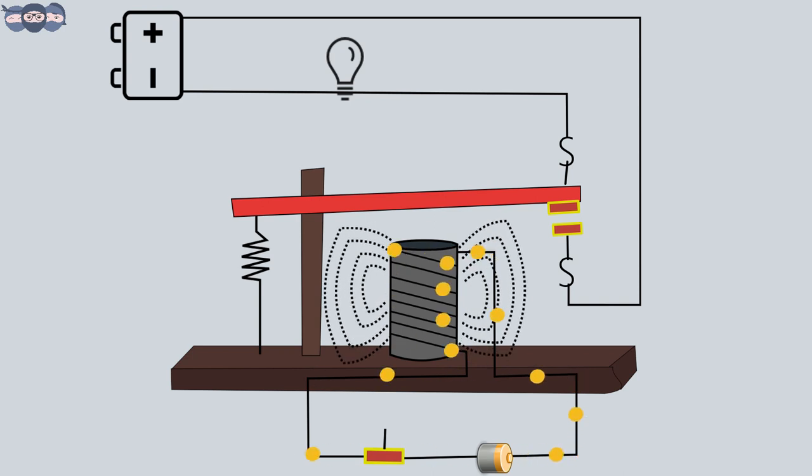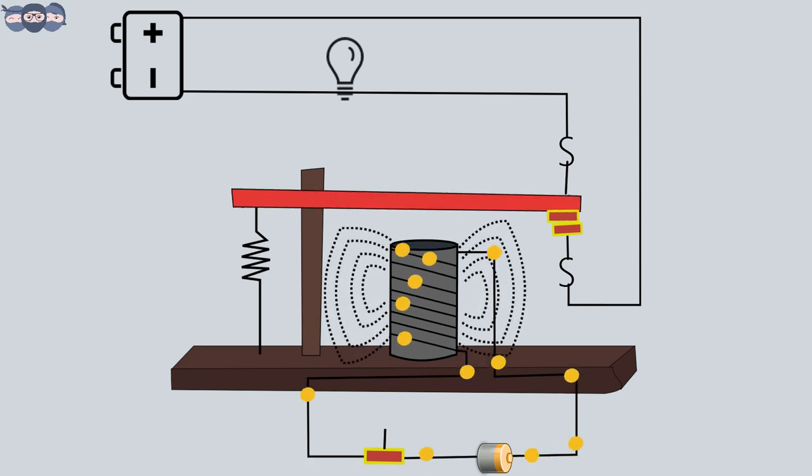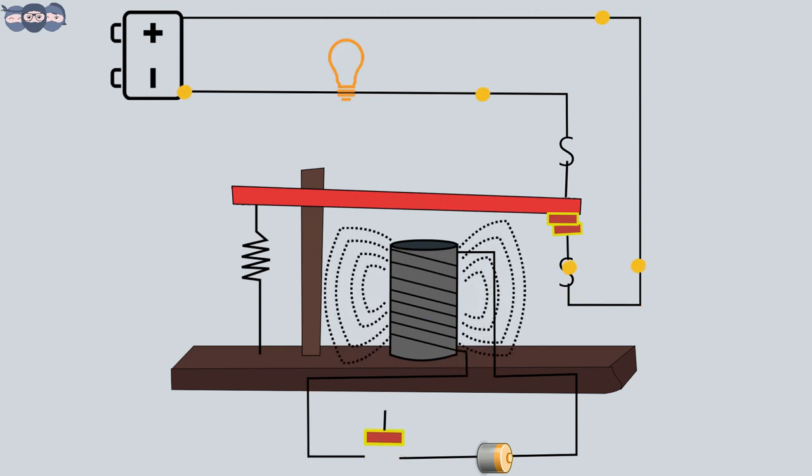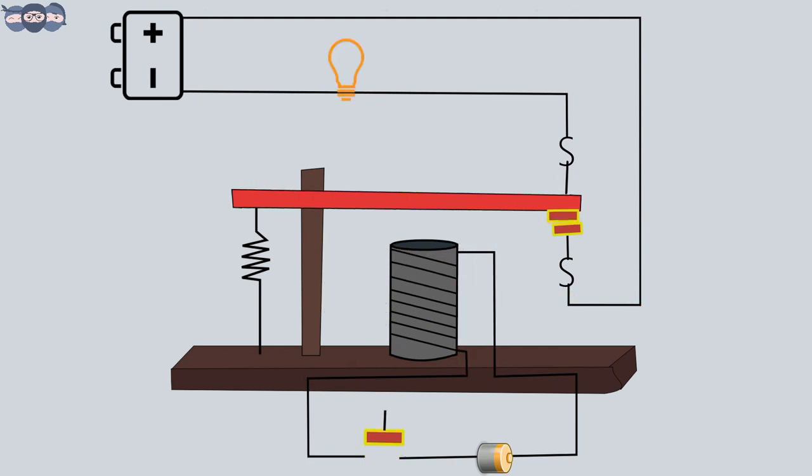it creates a small magnetic field which pulls the arm of the switch towards the coil and completes the second circuit. Thus, the light glows. When the electromagnet is not energized, the spring pulls the armature away and the circuit is not complete. The light is off.